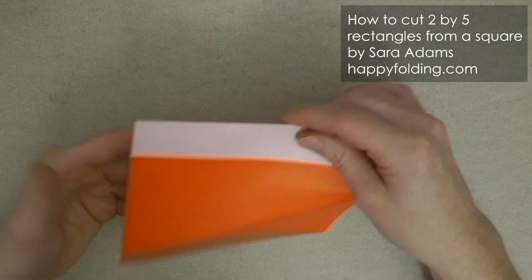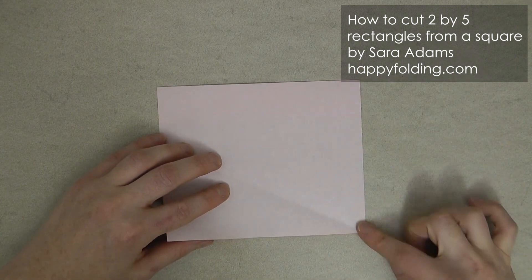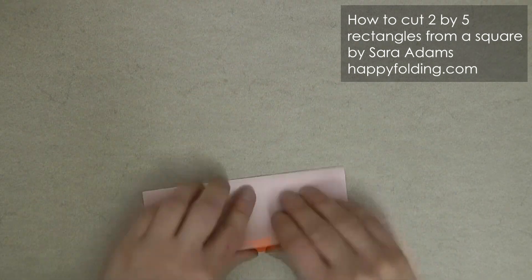This marks one-fifth of the whole length of the paper. By now dividing this section into quarters, we get 5 equal sections.